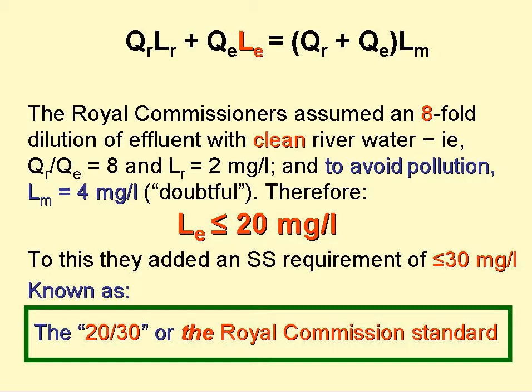To this BOD standard, they added a maximum suspended solids requirement of 30 milligrams per litre. This became known as the 20:30 standard, often, but erroneously, termed the Royal Commission standard.